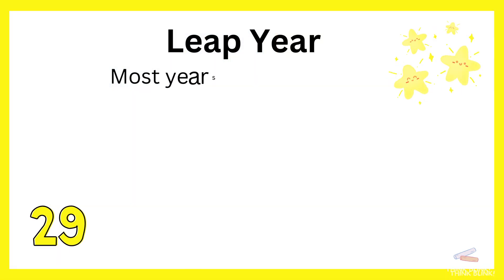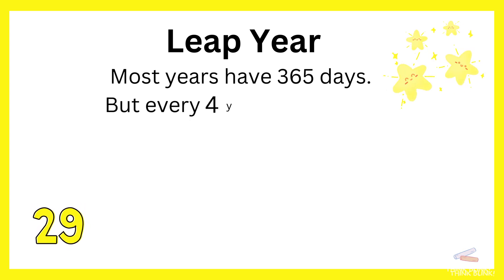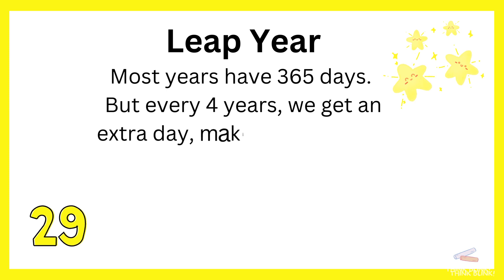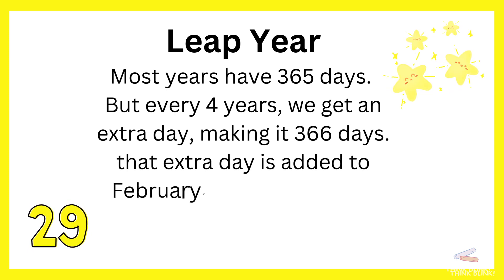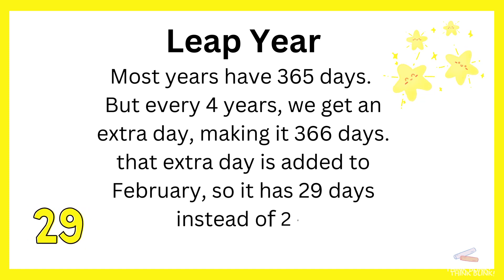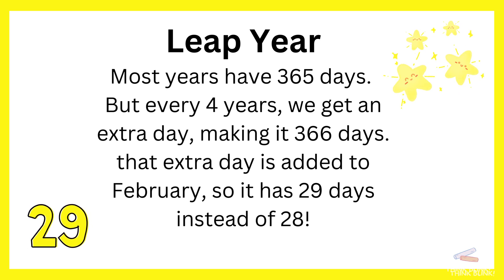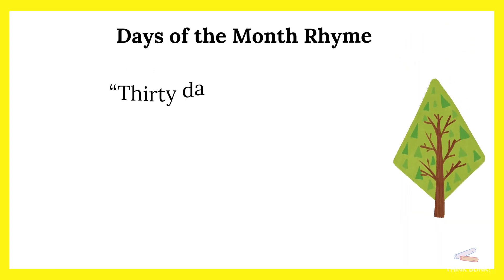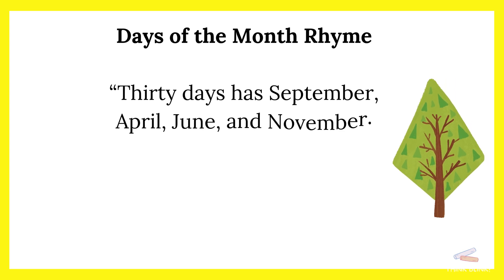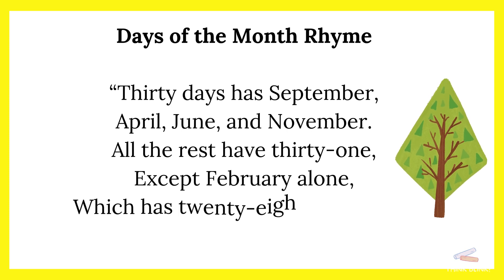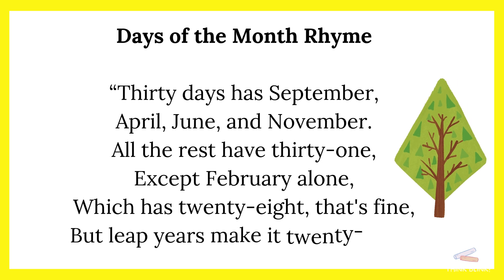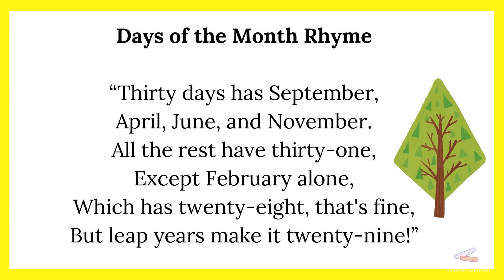Most years have 365 days, but every four years we get an extra day, making it 366 days. That extra day is added to February, so it has 29 days instead of 28. 30 days has September, April, June, and November. All the rest have 31, except February alone, which has 28 — but leap years make it 29.